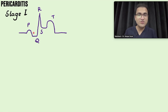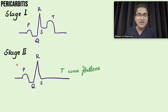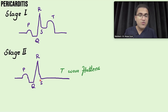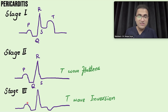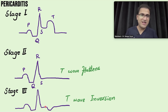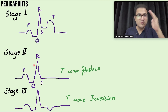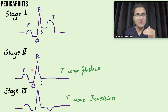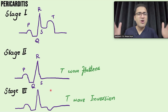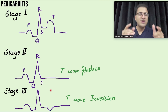ECG changes evolve over time. In Stage 1 (first few days): PR segment depression and ST segment elevation are present. In Stage 2 (over the next week): PR depression persists but ST elevation normalizes and T waves flatten. In Stage 3: PR depression continues with T wave inversion and no ST elevation. PR segment depression is constant across stages 1–3, while ST elevation resolves by stage 2.